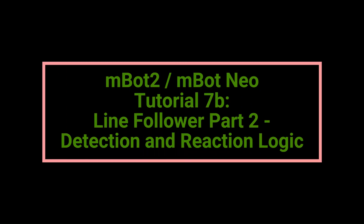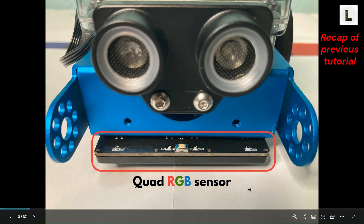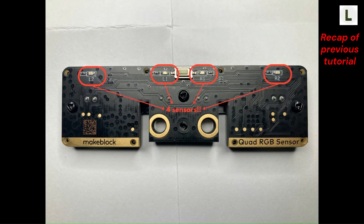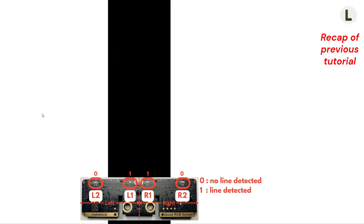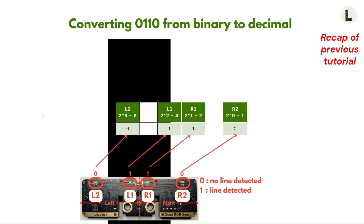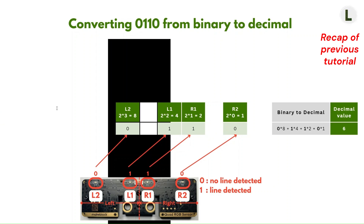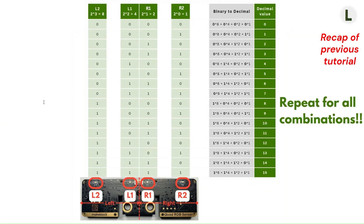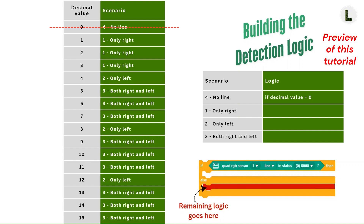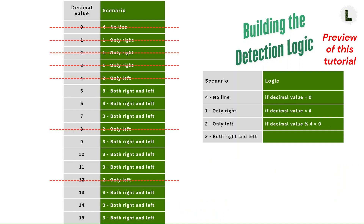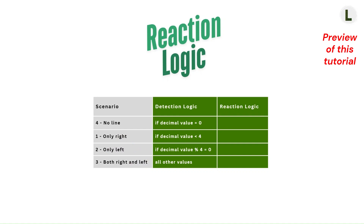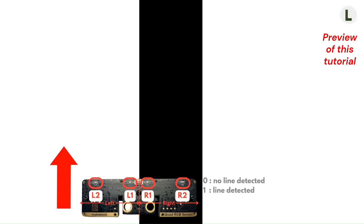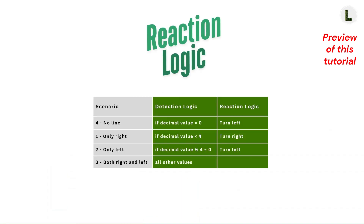Welcome back to LearnAsYourExplorer for part two of our three-part line follower series. In the last video, we learned about the QuadRGB sensor and how it detects lines. We learned to read the value reported by the QuadRGB sensor module and how to interpret each of the 16 values from 0 through 15. In this video, we'll continue by learning how to define the detection logic and the reaction logic that is crucial to understand and plan out our block program.